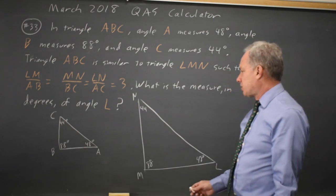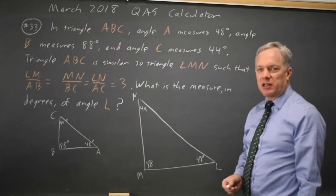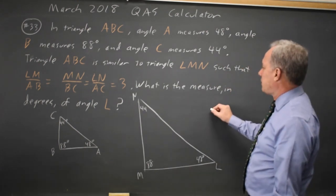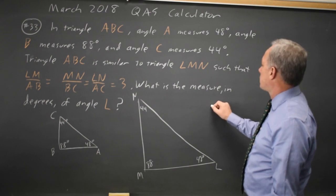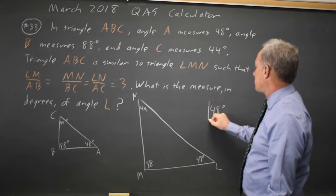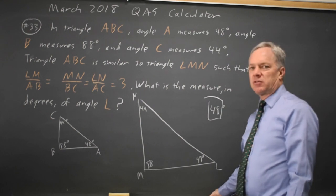And since they're similar triangles, the measure of angle L equals the measure of angle A equals 48 degrees. So you would grid in 48.